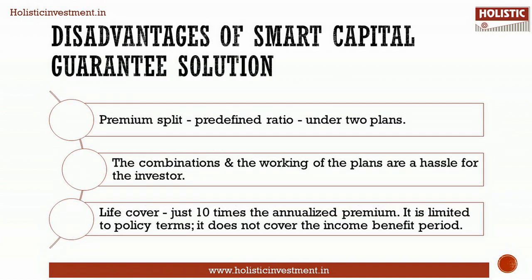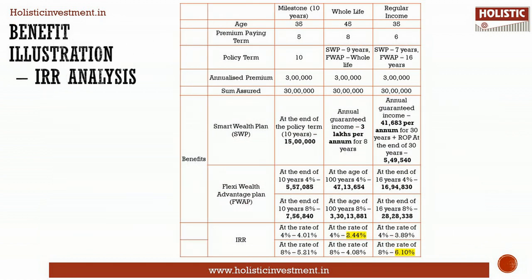Among the disadvantages: the premium is split in a predefined ratio and invested under two plans — the policyholder has no control over the allocation. The combination and working of the plan are a hassle for an investor. The life cover under this plan is just 10 times the annualized premium, limited to the policy term, and does not cover the income benefit period. Simply knowing about the plan cannot help you decide whether to buy it.